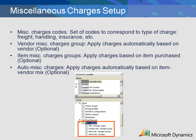Setup of miscellaneous charges is found in the Accounts Payable module under the Setup folder. There are four possible ways to configure the charges. First, establish miscellaneous charge codes. This is most commonly done to apply manual miscellaneous charges onto a purchase order prior to posting the purchase order.